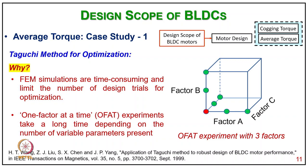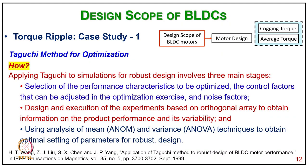Coming to the Taguchi method of optimization: FEM simulation is time-consuming and limits the number of design trials. One factor at a time (OFAT) takes a long time depending on the number of present variables. Applying the Taguchi simulation for robust design involves three main stages: selection of performance characteristics to be optimized; control factors that can be adjusted in the optimization exercise; and noise factors. Design of experiments based on orthogonal arrays is used to obtain information on product performance and its variability.